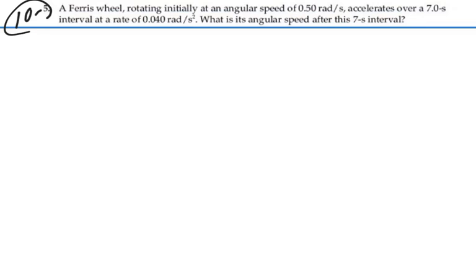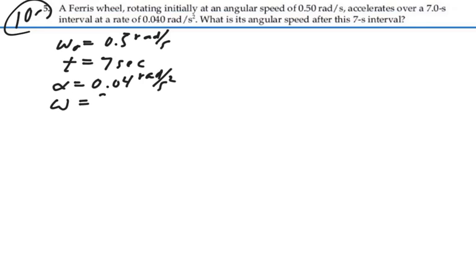Alright, so we're given the initial angular speed of 0.5 radians per second. We know that by the units, radians per second. We're going to have a 7 second interval, so our time is 7 seconds. And we're going to have an angular acceleration of 0.04 radians per second squared. All these we can identify by the units. We want to find the final angular speed.